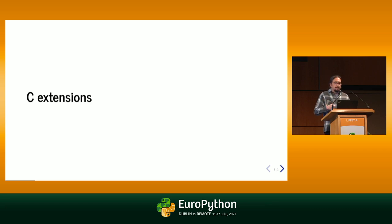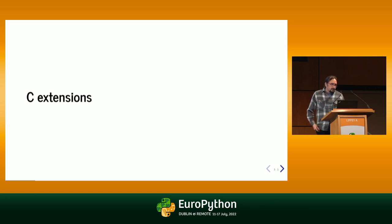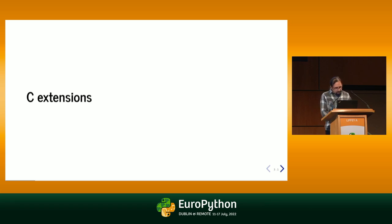Cython does clearly rely on the C API, and you also have other possibilities to write extensions in statically compiled languages. You can use C++ directly, or you can use PyBind11. You can write extensions in Rust, but all of that relies on the C API.